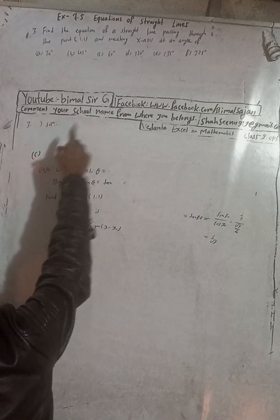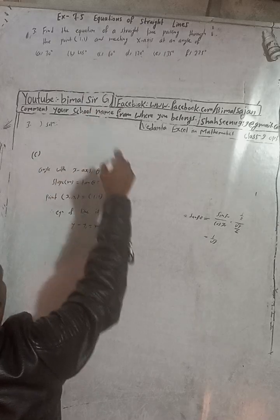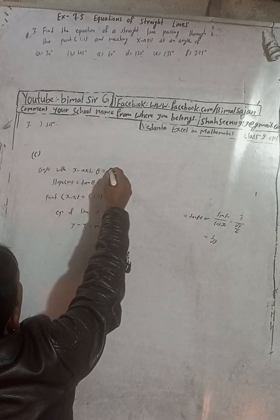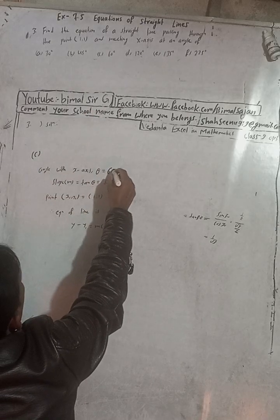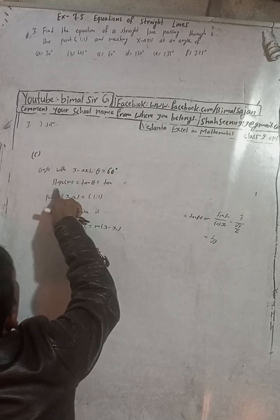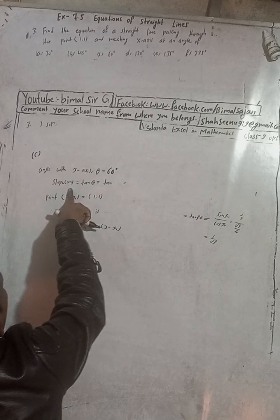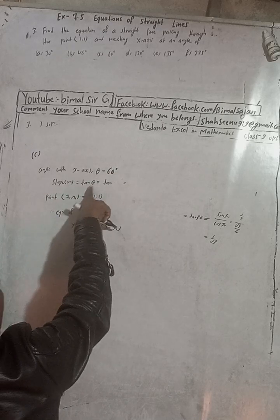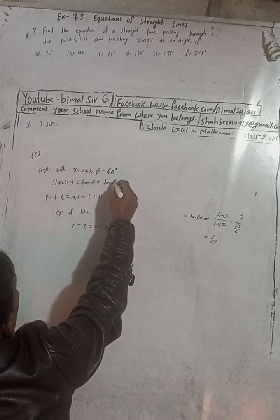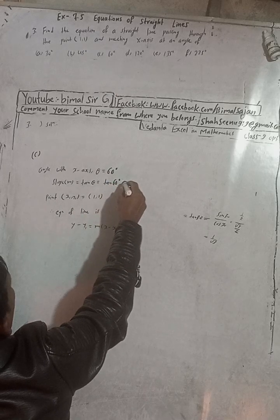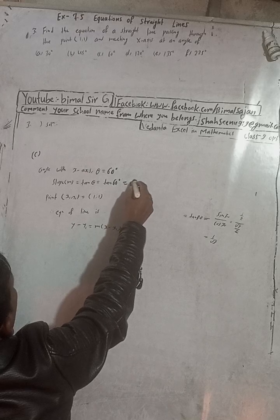For part (c), the angle with the x-axis theta equals 60 degrees. So slope m equals tan theta, and tan 60 degrees equals root 3. The point is again (1, 1).